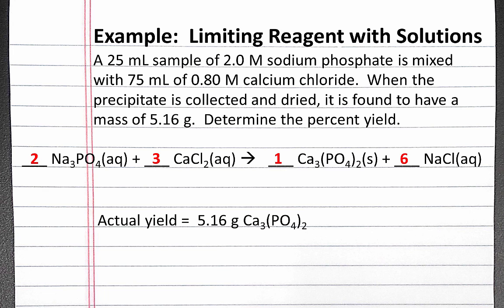We should also note that in the problem we're given the actual yield. When we run the experiment, we produce 5.16 grams of our precipitate, which is calcium phosphate.